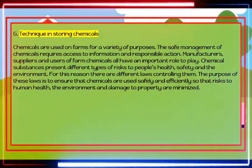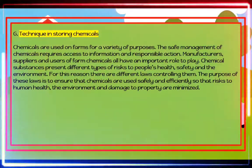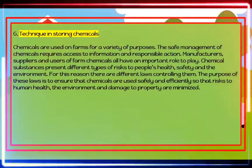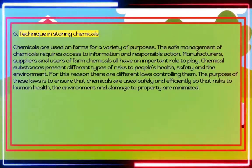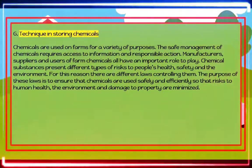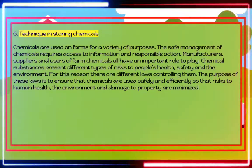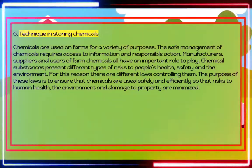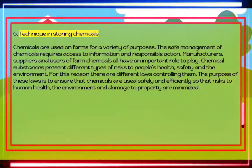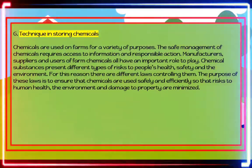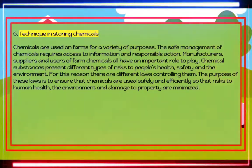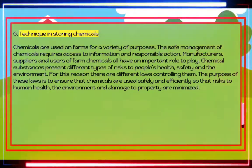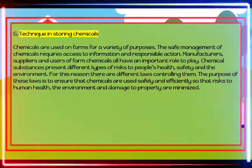Technique in storing chemicals: Chemicals are used on farms for a variety of purposes. The safe management of chemicals requires access to information and responsible action. Manufacturers, suppliers, and users of farm chemicals all have an important role to play. Chemical substances present different types of risk to people's health, safety, and the environment. For this reason, there are different laws controlling them, with the purpose of ensuring that chemicals are used safely and efficiently to minimize risk to human health, the environment, and property.